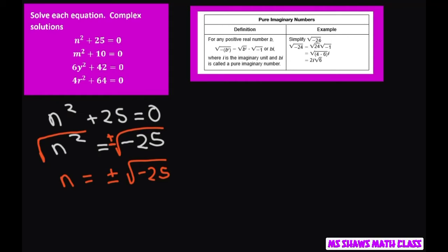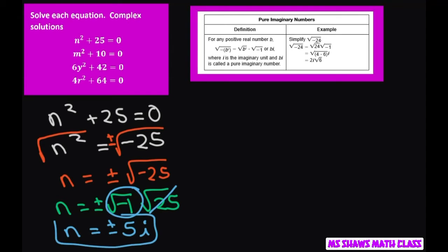Now we're going to write this as n equals plus minus square root of negative 1 times square root of 25, and the square root of 25 is just 5. So you get n equals plus or minus 5, and the square root of negative 1 is i. So that would be your answer for the first one.